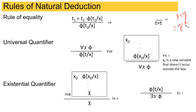Now, for the universal quantifier: if we are given for all x of a formula, then we can take a term t which can replace x — that is the elimination rule of the universal quantifier. The introduction rule is: given an x₀ and we can conclude the formula φ(x₀) replacing a variable x, then we can say for all x, φ. The important thing is x₀ should not have occurred anywhere outside this box. It's like picking any random value from a set and proving that φ holds — that's the introduction rule for the universal quantifier.